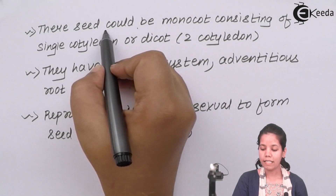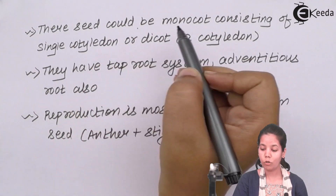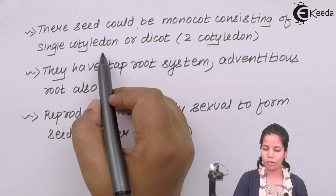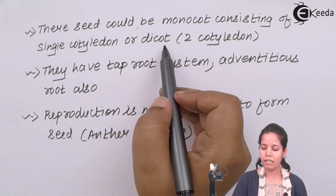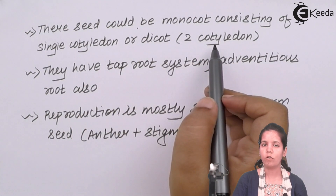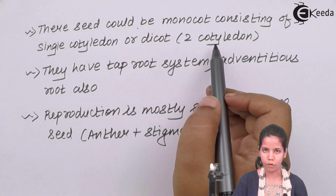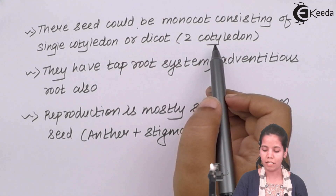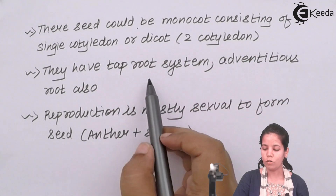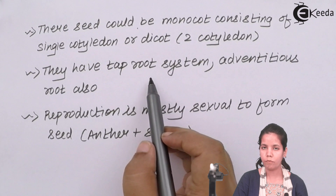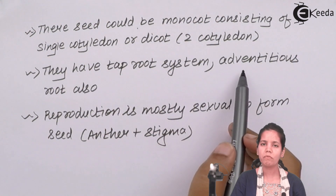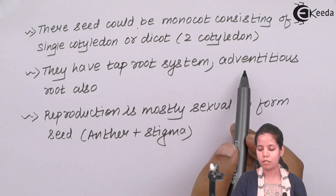The seeds could be monocots, consisting of a single cotyledon, or dicots, consisting of two cotyledons — for example, rice and maize. They also have tap root systems, that is primary and secondary root systems, or adventitious or fibrous root systems.